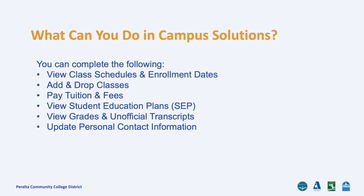What can you do in your Campus Solutions account? You can complete the following: view class schedules and enrollment dates, add and drop classes, pay tuition and fees, view student education plans, view grades and unofficial transcripts, and update your personal contact information.